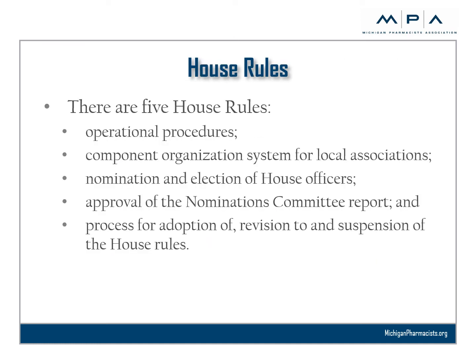There are five House Rules that govern House business. Rule 1, Operational Procedures: this area covers the process of the resolutions themselves, how a resolution is introduced, and the types of votes taken for action on the resolutions. Rule 2, Component Organization System for Local Associations: here you will find the breakdown formula for dues allocation, which provides the funding for a local association. Rule 2 also covers the criteria and reporting necessary for local associations to maintain their active status in the form of mandatory and optional activities. Rule 3, Nomination and Election of House Officers: the Speaker and the Vice Speaker are elected to two-year terms on even-numbered years and are term-limited to two terms for each position. Rule 4, Approval of the Nominations Committee Report. And Rule 5, The Process for Adoption of, Revision to, and Suspension of the House Rules.